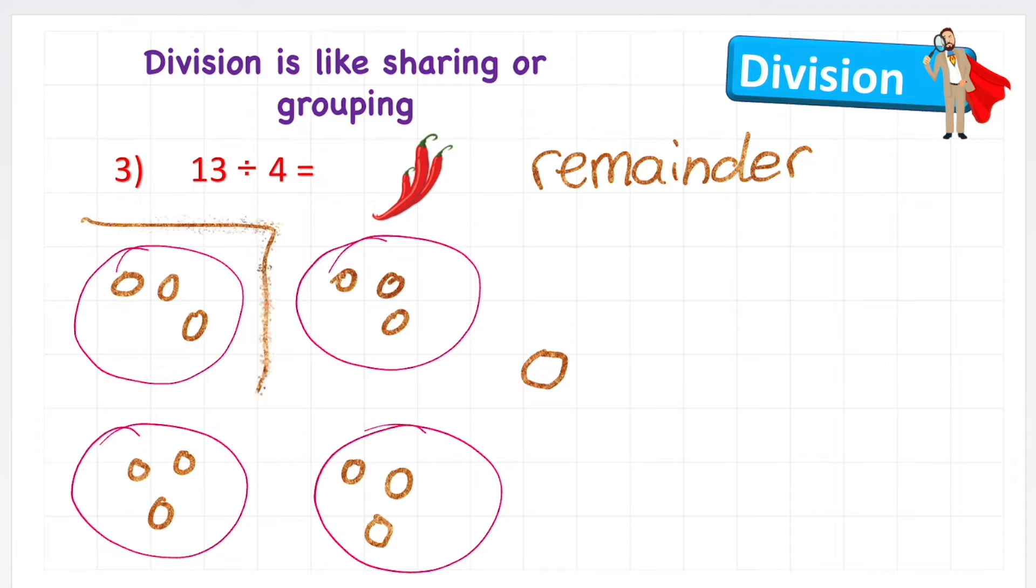So now my answer is going to be 13 divided by 4 is, well, let's check how many we've got in one sharing circle, and that's three. So it's going to be three, but I've got one remaining, or one remainder. So I can put R, the remainder, one. Three, remainder, one. And that's a really high-level skill to understand in division. So if you understood that, great.